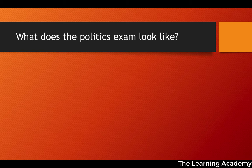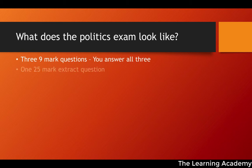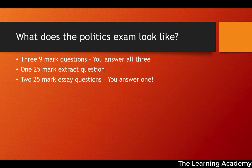So what does the politics exam actually look like? There are three nine-mark questions and you have to answer all three. There's one 25-mark extract question — you just answer that one. And then you get a choice between two potential 25-mark essay debate-type questions, so you answer one of those two. That means the total marks is 77.